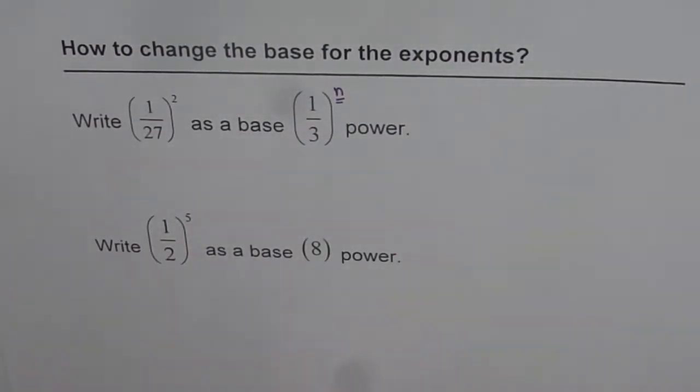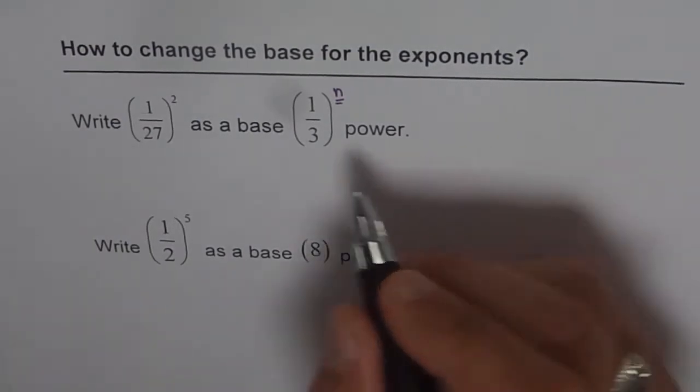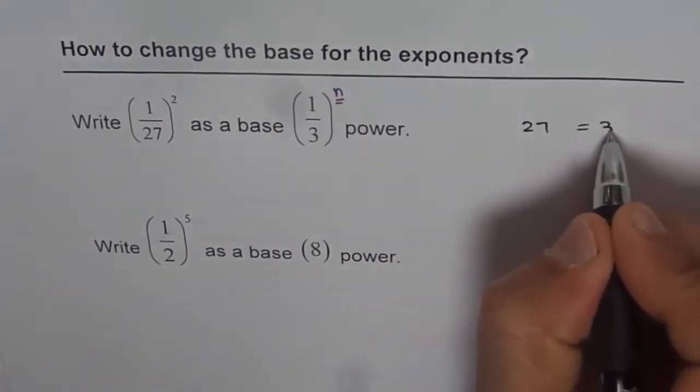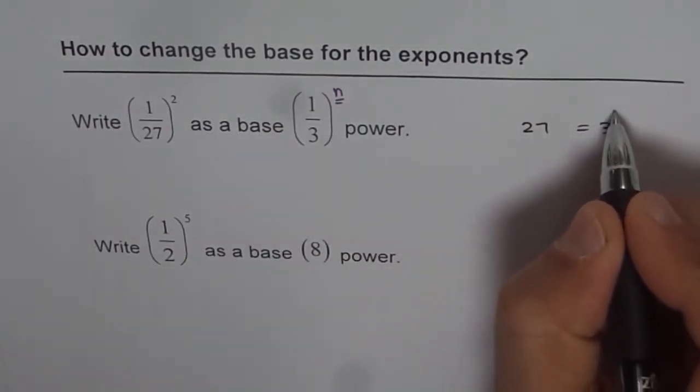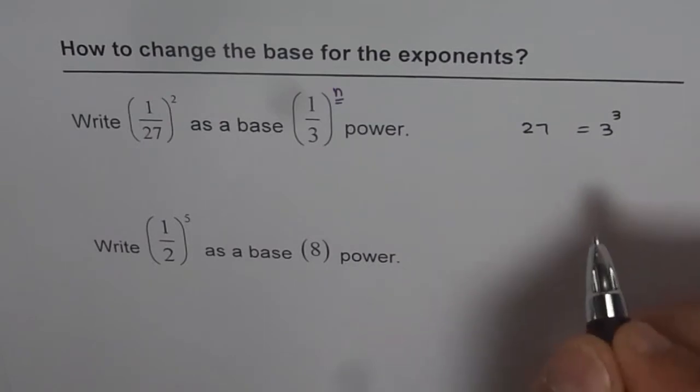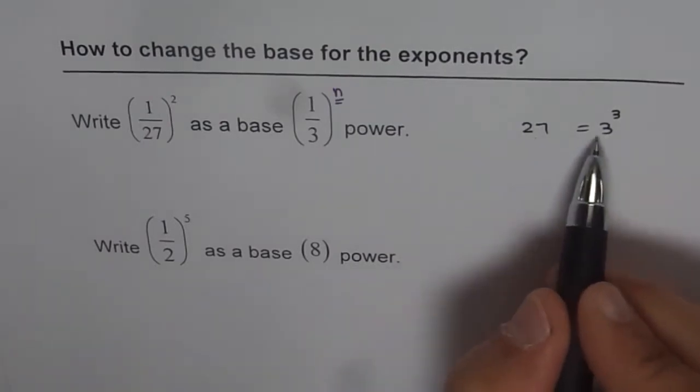How can we do that? Now how is 27 related with 3? First think about that. So 27 and 3, the relation is that 3 cube is 27, right? 3 times 3 is 9 and 9 times 3 is 27. So 27 can be written as 3 cube.